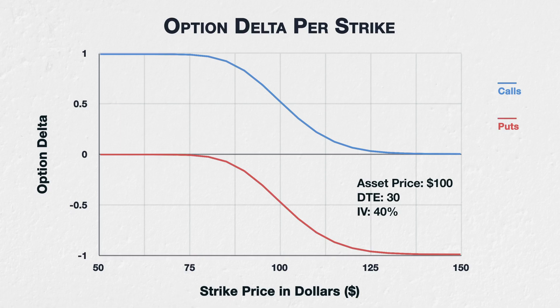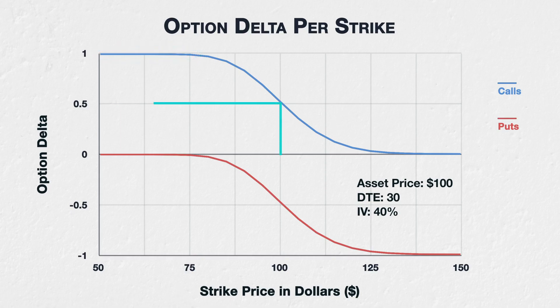We learned in the previous lecture that call options have positive delta, because they increase in value when the underlying price increases. As you can see here, the call option deltas, in blue, are all between 0 and 1. The lower strike calls that are deep in the money have deltas approaching 1, the at-the-money strike of $100 has a delta of about 0.5, and the higher strike calls that are deep out of the money have deltas approaching 0.